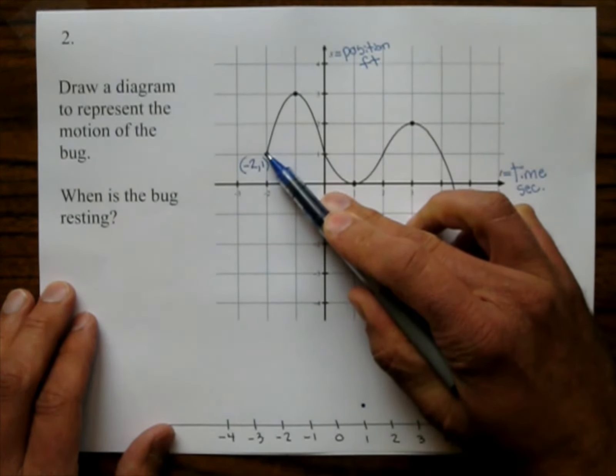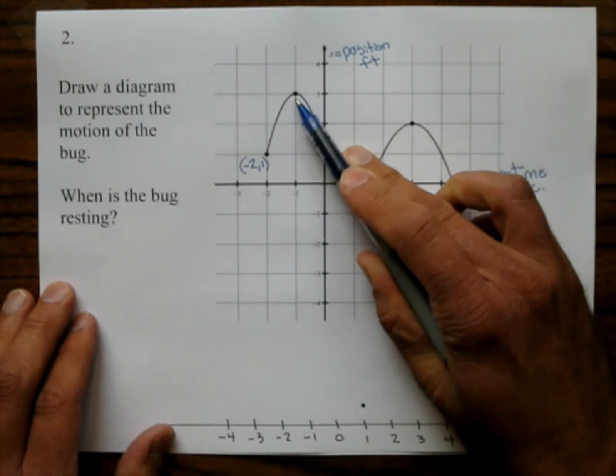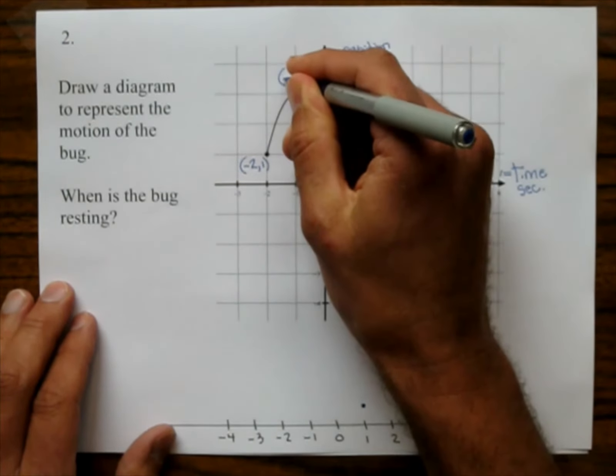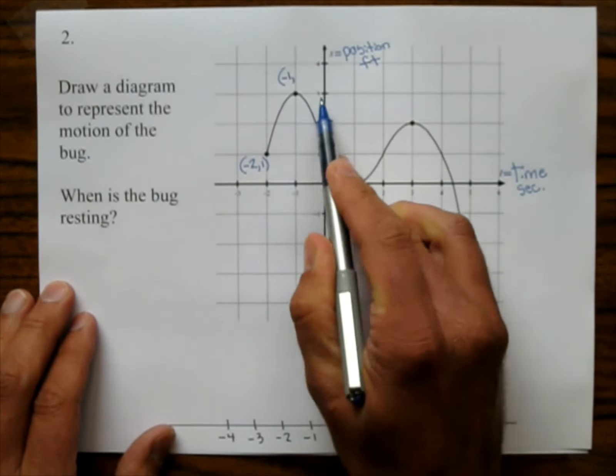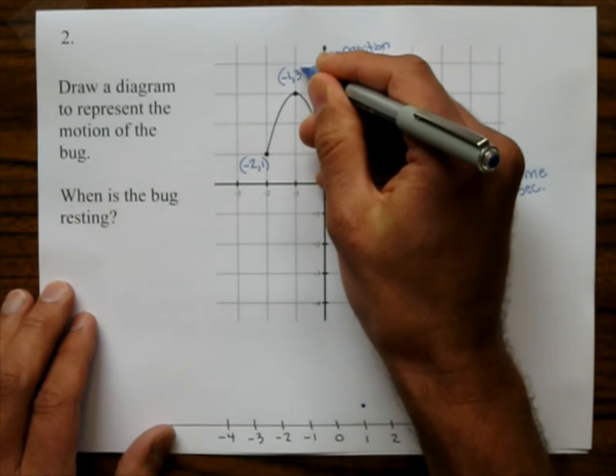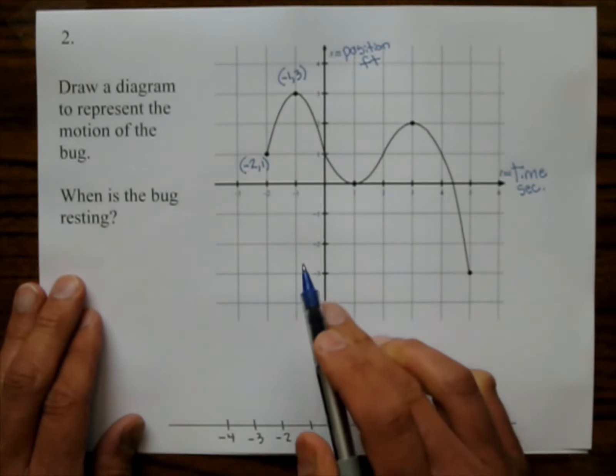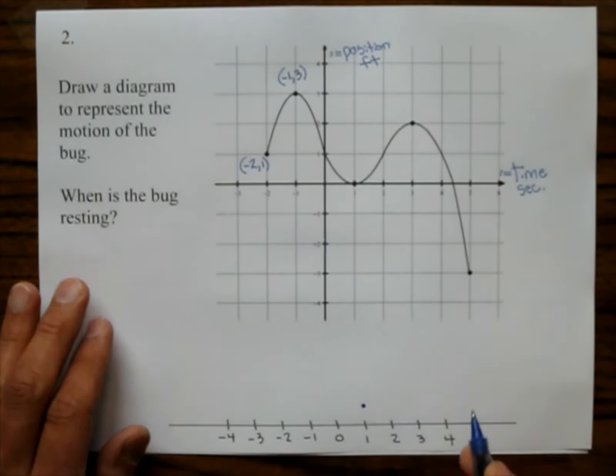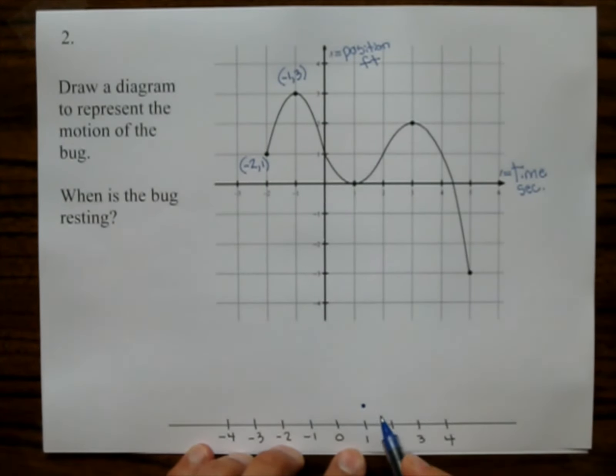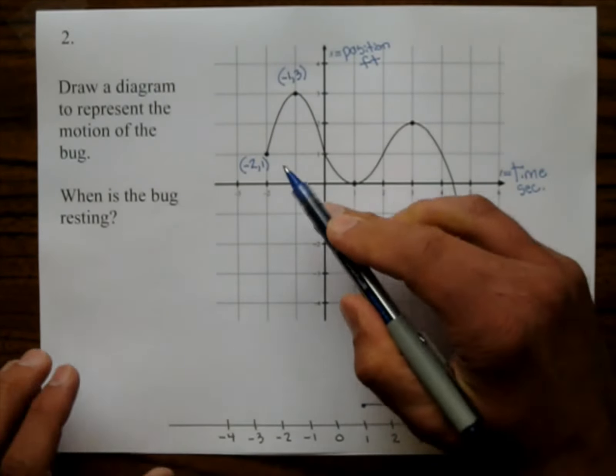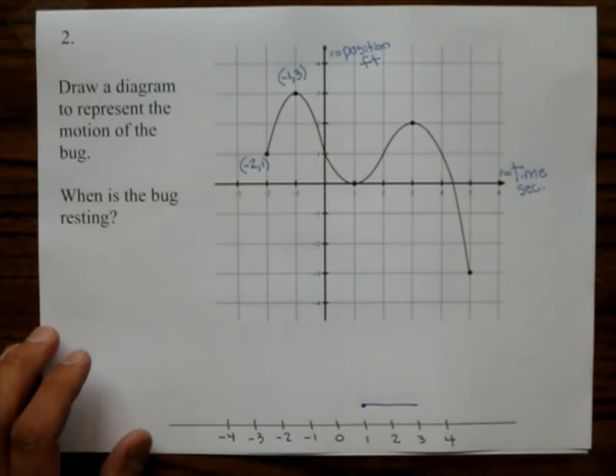What happens from here to here? Well, let's label this point. This is at negative 1 seconds. The bug is at where? At 3. So negative 1 seconds. So he went from position 1 to position 3, which means the bug goes like that from here to here. So that's how it's going to start.